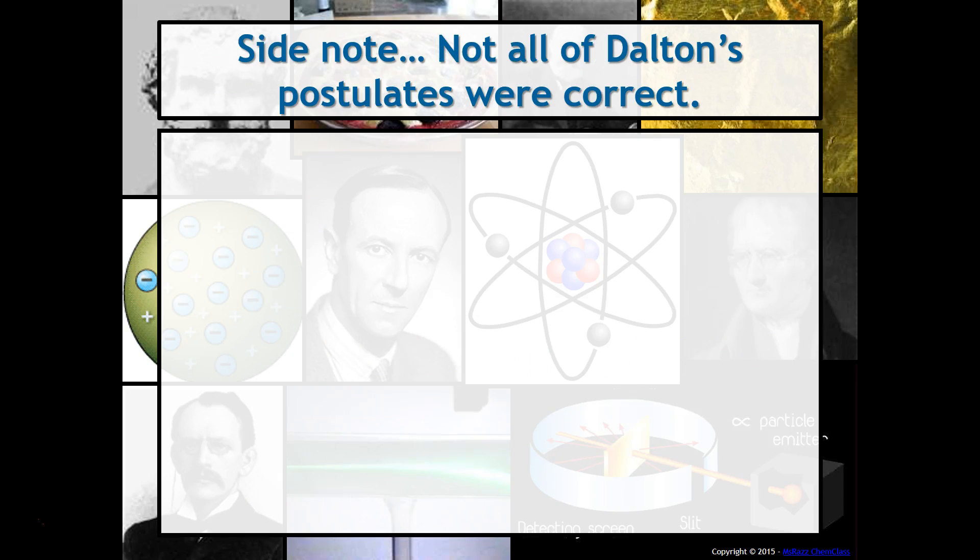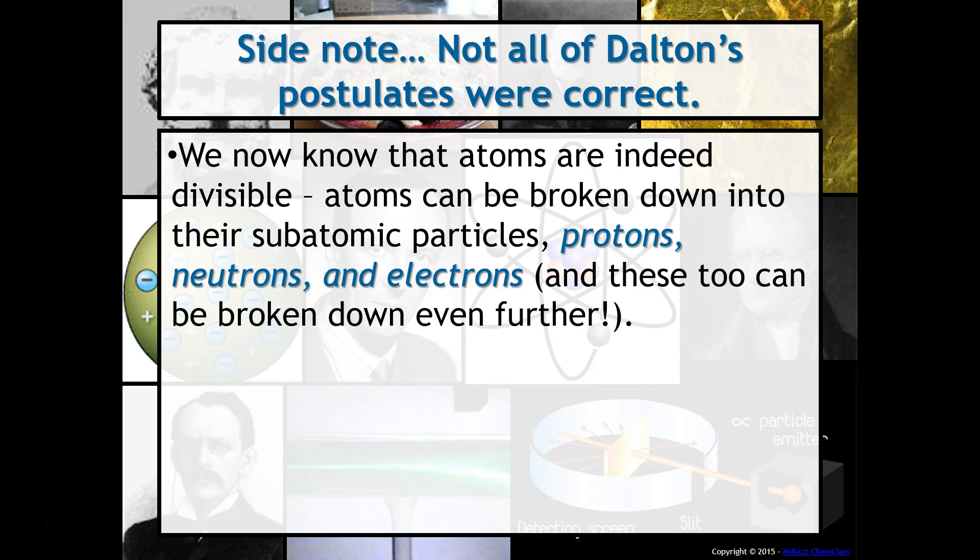As you might expect, and I talked about this a little bit earlier, not all of Dalton's postulates were correct. We now know that atoms are indeed divisible. Atoms can be broken down into their subatomic particles, such as protons, neutrons, and electrons. And these too can be broken down even further. Have you ever heard of a quark?